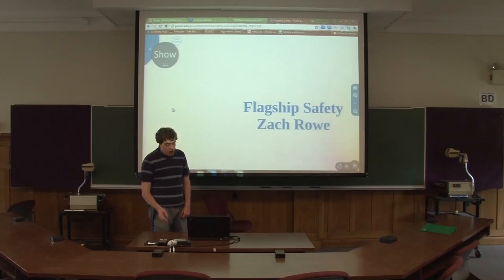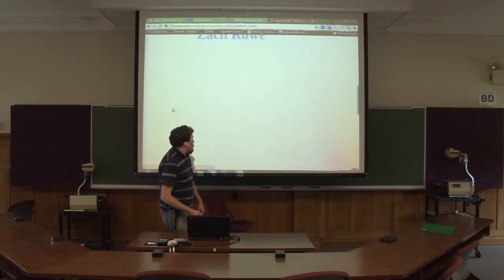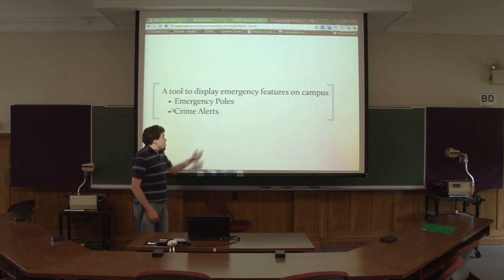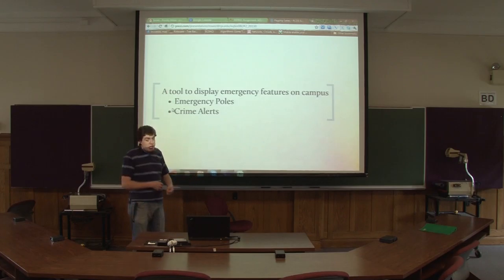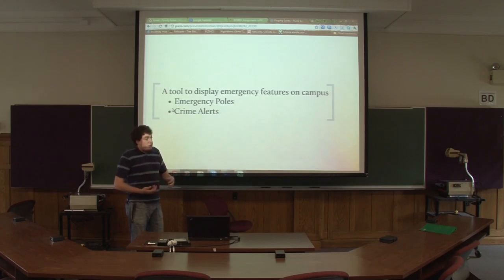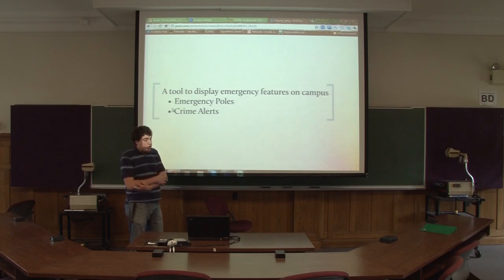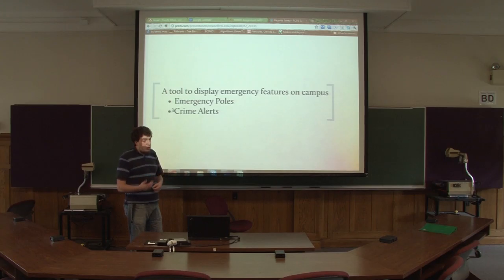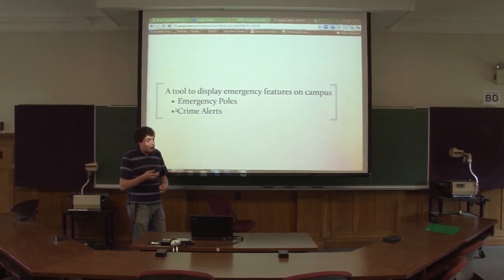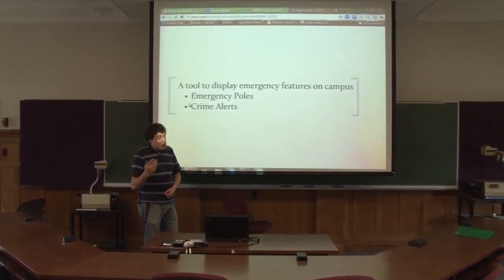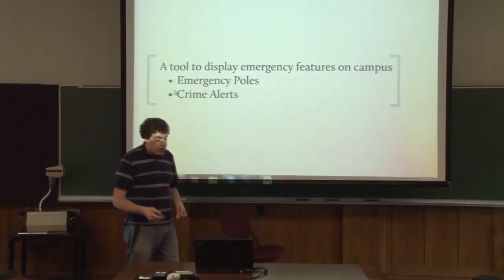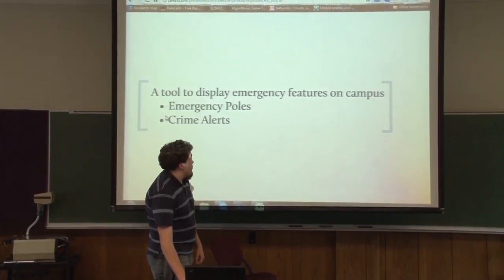I'm developing Flagship Safety. Flagship Safety is supposed to be able to display all the emergency features on campus right now. It can display roughly all the emergency calls, the big red boxes that you see, as well as all the crowd alerts that public safety posts — because currently they get taped on the windows but there's no real persistence, and you can't see trends or any of that kind of useful information.